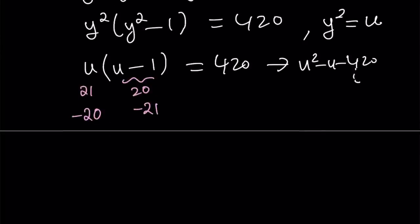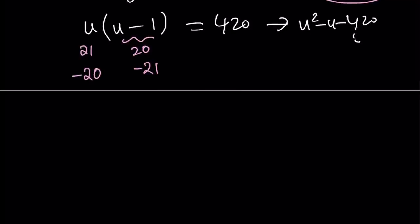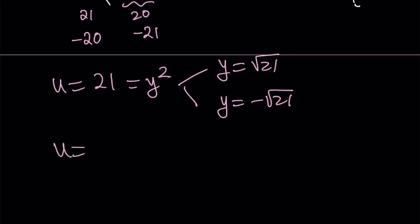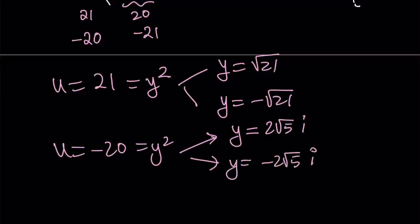Great. Now, we have two solutions, two sets of solutions for u, but u is y squared. So if u is equal to 21, that means it's equal to y squared. From here, we get two solutions. y is going to be square root of 21 or negative square root of 21. What happens if u is equal to negative 20? Well, you're not going to get real solutions. The solutions are going to be complex, non-real. And y is going to be from here. If you square root of negative 20, you're going to get the square root of 20 multiplied by i, which is 2 root 5 times i, or the opposite of that.